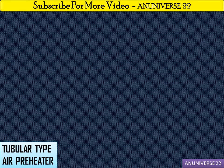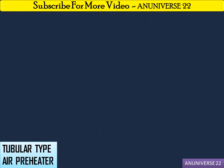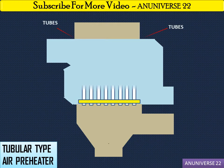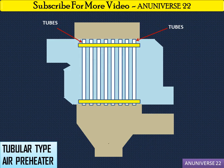Today we discuss about tubular type air preheater. The location of the air preheater in a steam power plant is usually placed after the economizer and before the gases enter the chimney, as shown in the figure. These are the tubes — that is why it is called a tubular type air preheater. This type of air preheater is commonly used in smaller boiler plants.